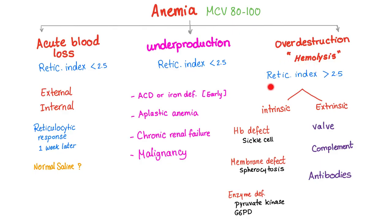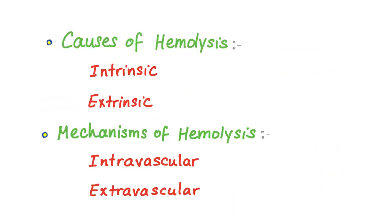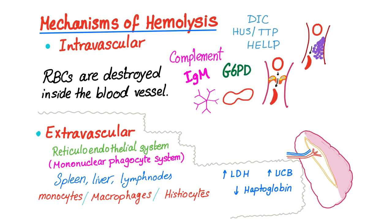The reticulocyte index is more than 2.5, so there is reticulocytosis. From the cause standpoint, it is either intrinsic or extrinsic. Mechanisms of hemolysis are intravascular or extravascular. There are other classifications such as inherited versus acquired, acute versus chronic, etc.